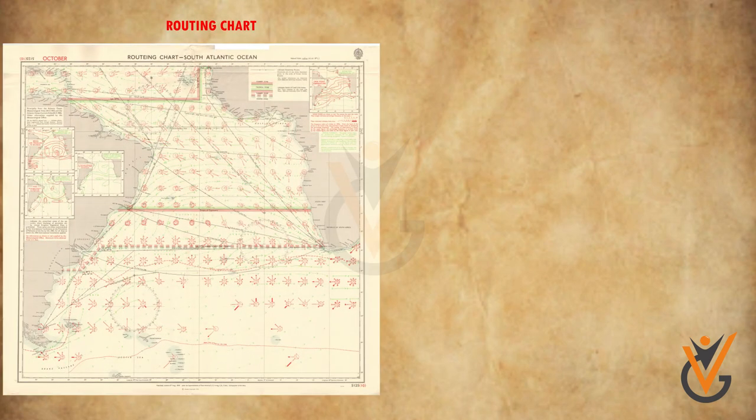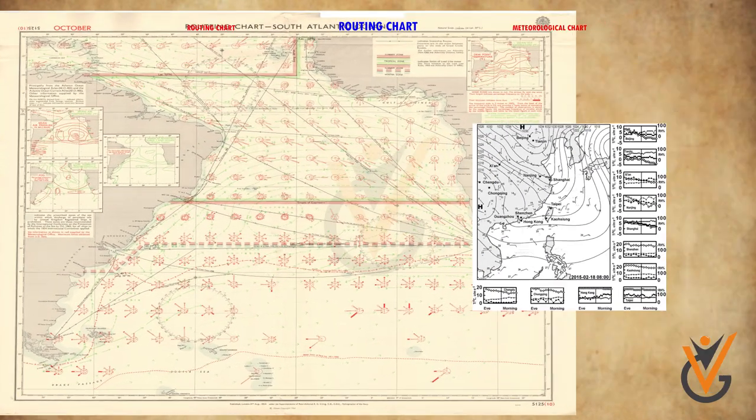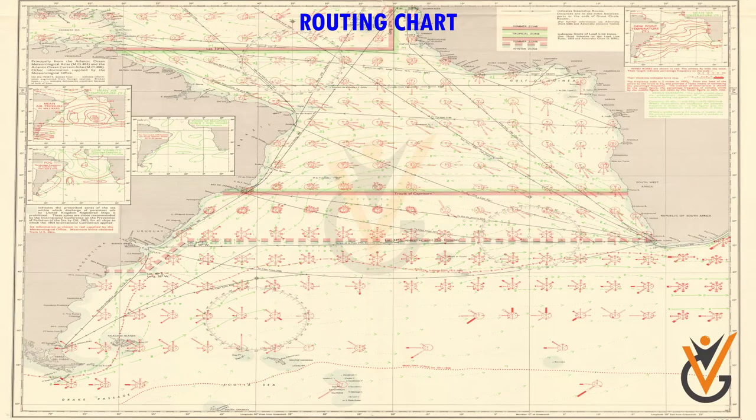In addition to nautical charts used for navigating a ship, mariners also use routing charts and meteorological charts. Routing charts are essential for use in passage planning for ocean voyages. These charts include information such as routes.